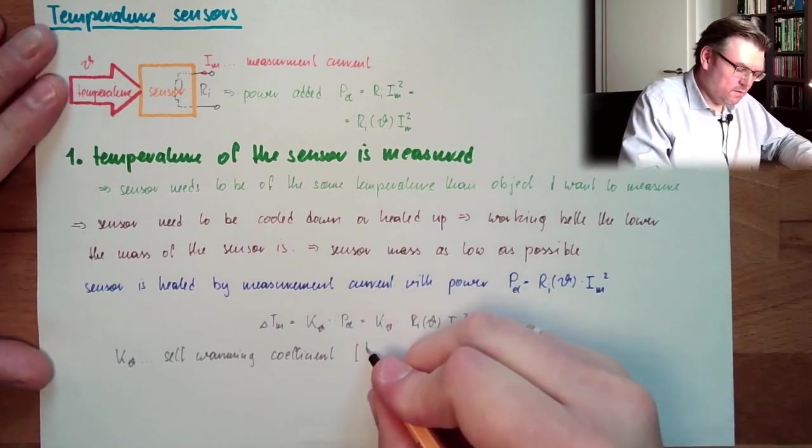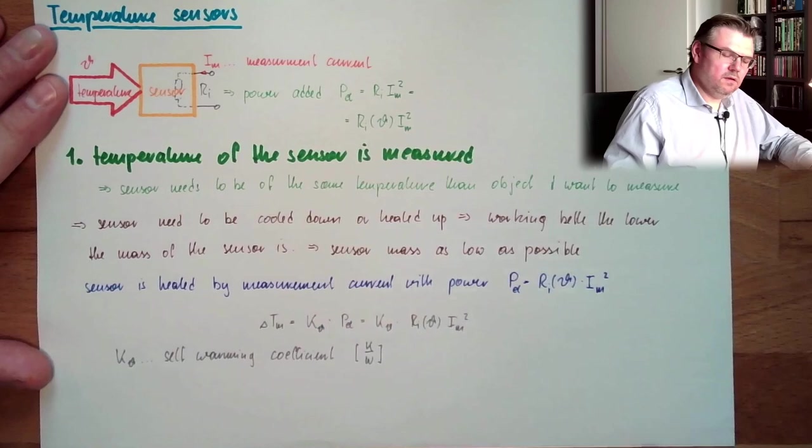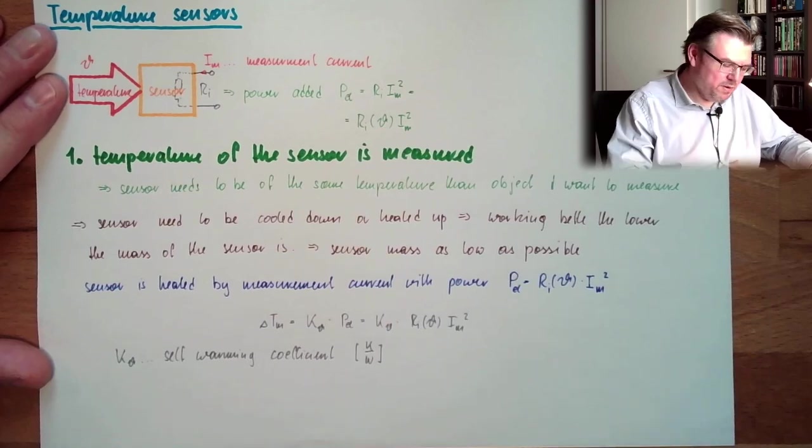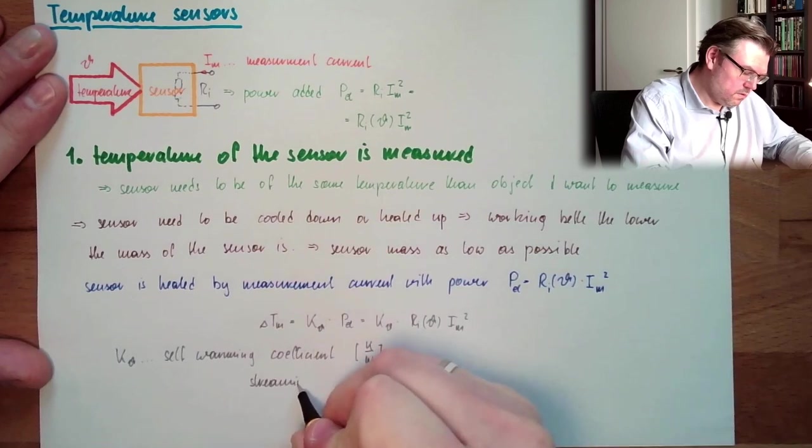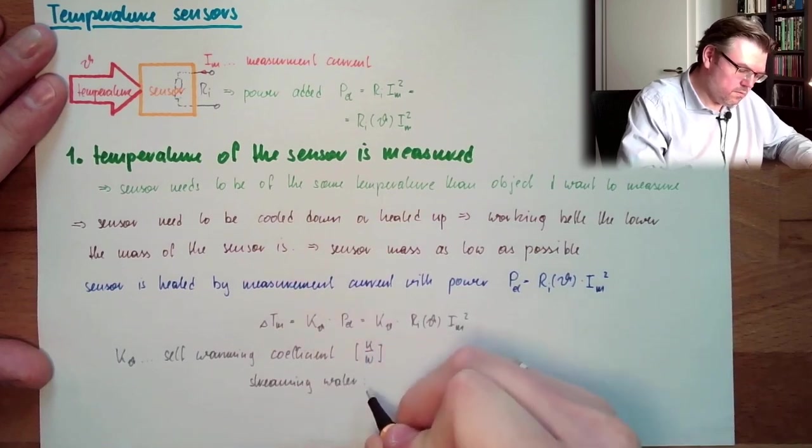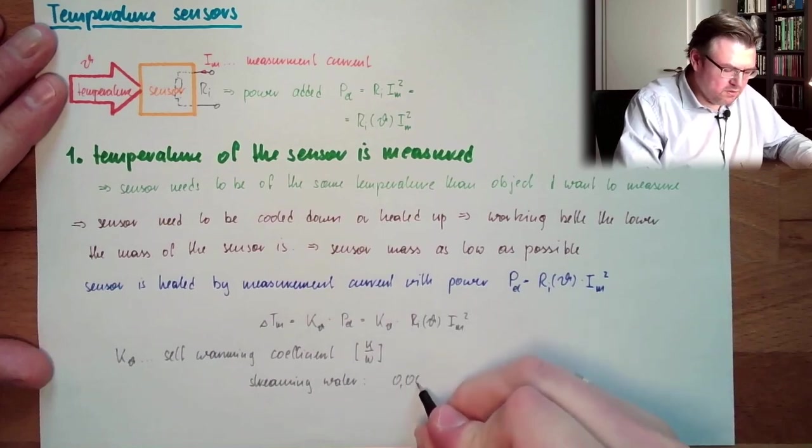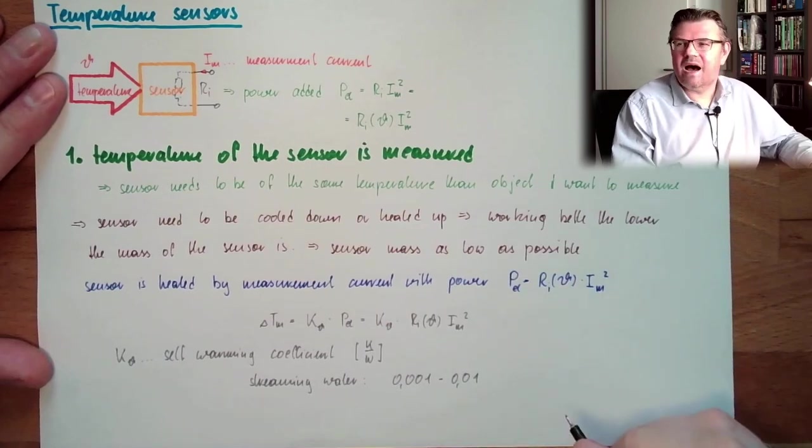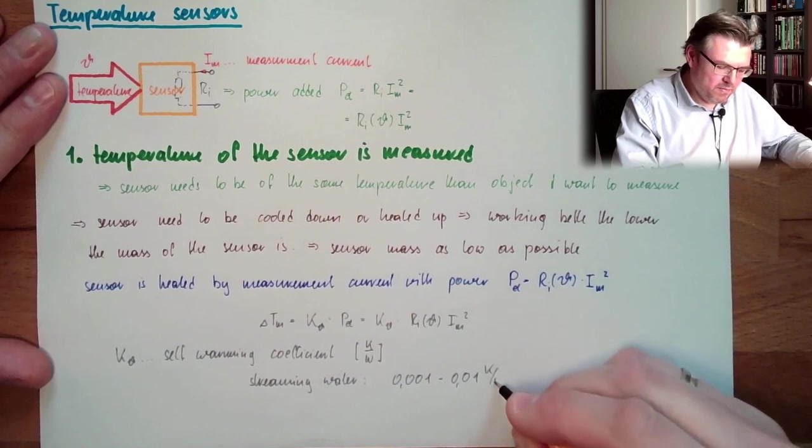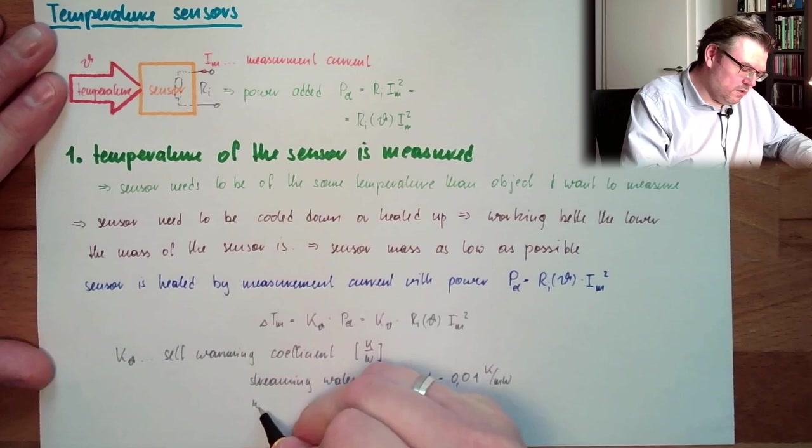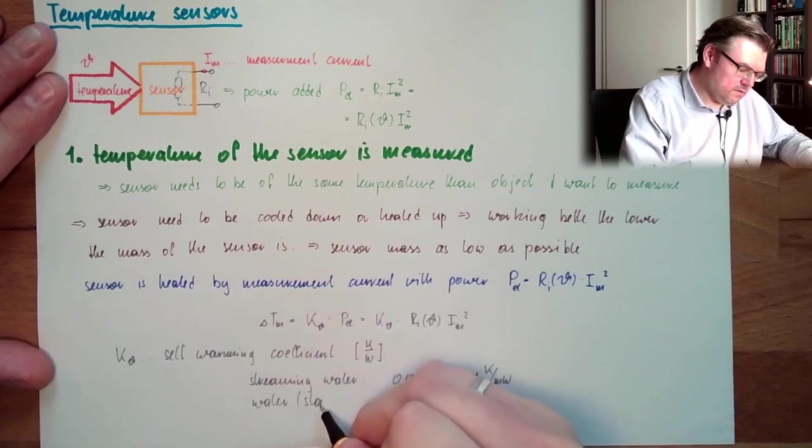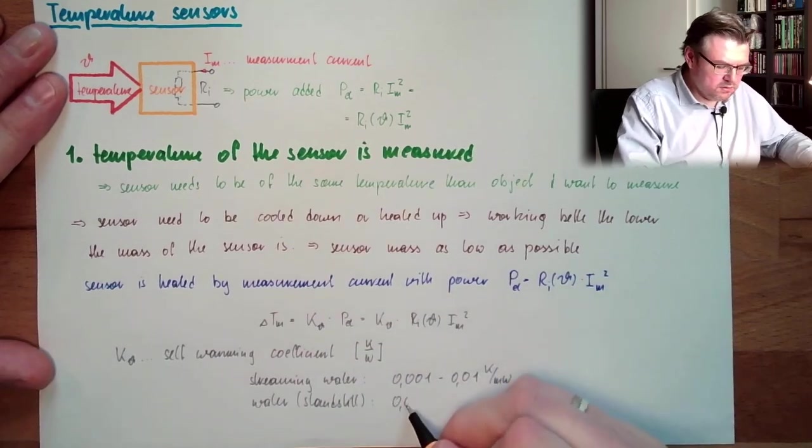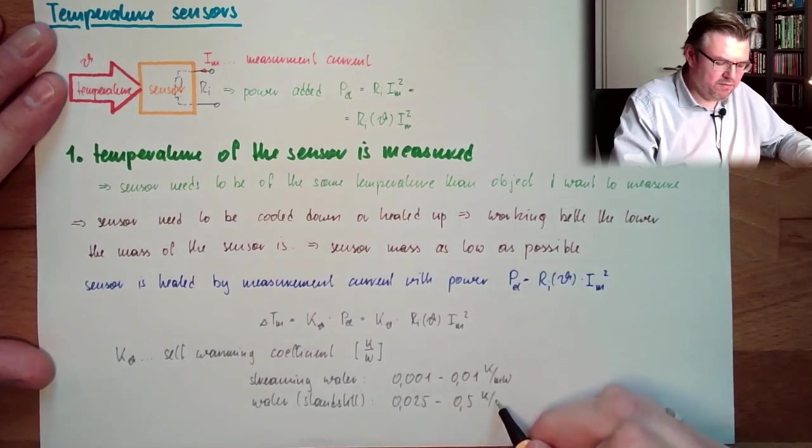It's in Kelvin, Kelvin per watt. Okay? If you have some streaming liquid, streaming water, okay, this is 0.001, somewhere in this area, it's 0.01, so maybe a percent if it's high. Kelvin by milliwatt. If it's water, stand still, then you can guess this to 0.025 up to 0.5 Kelvin by milliwatt.